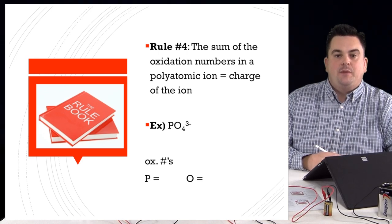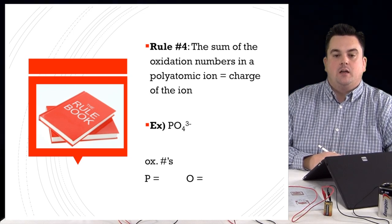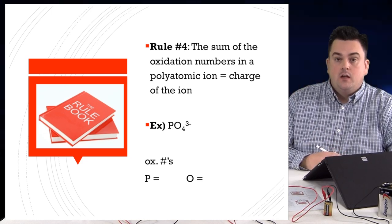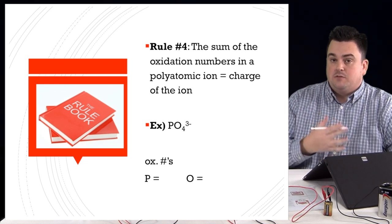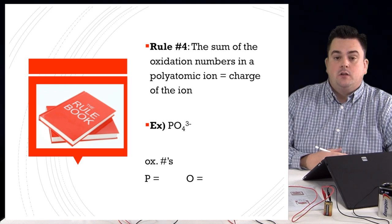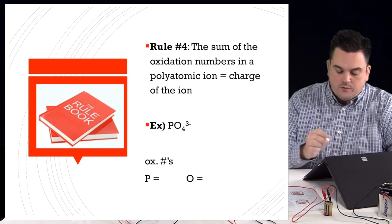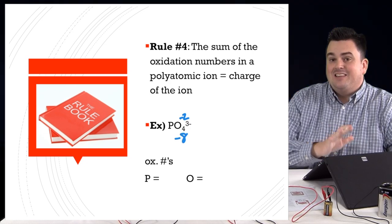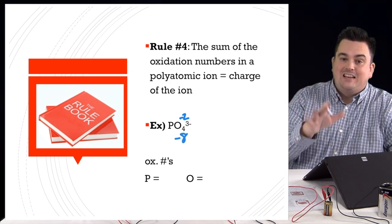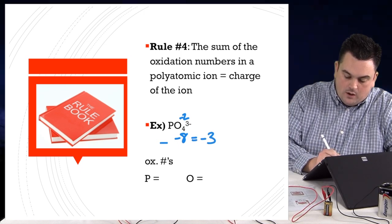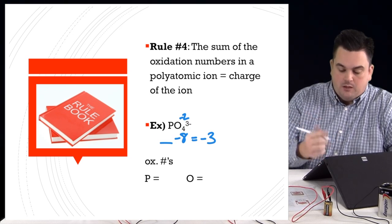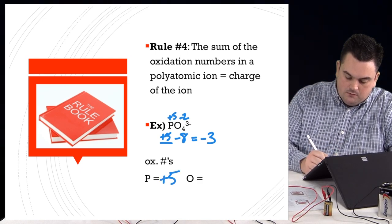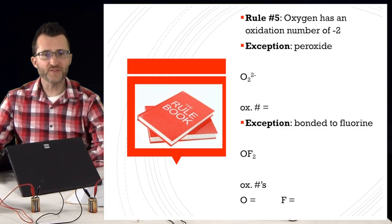Rule 4: the sum of the oxidation numbers in a polyatomic ion must equal the total charge of that polyatomic ion. For example, phosphate (PO4) has a negative three charge, so everything must add up to negative three. Phosphorus has multiple oxidation states — negative three, plus three, and plus five — so we skip it. Oxygen is negative two; with four oxygens, the total is negative eight. We need the sum to equal negative three, so negative eight plus what equals negative three? That's plus five. Phosphorus is plus five and oxygen is minus two.